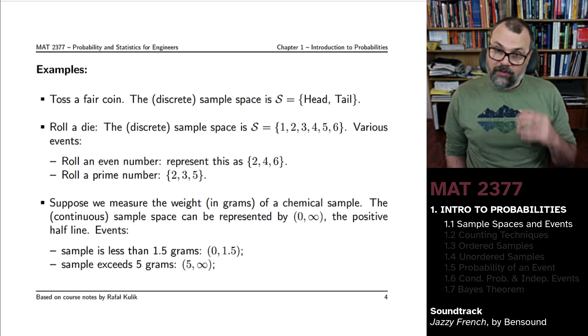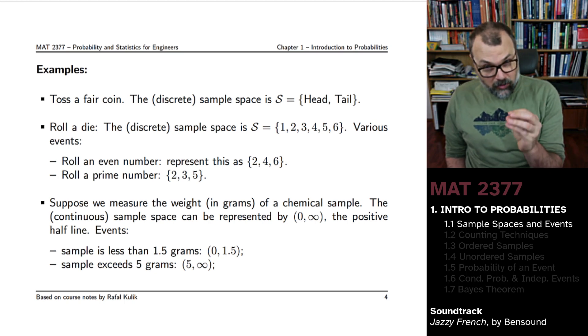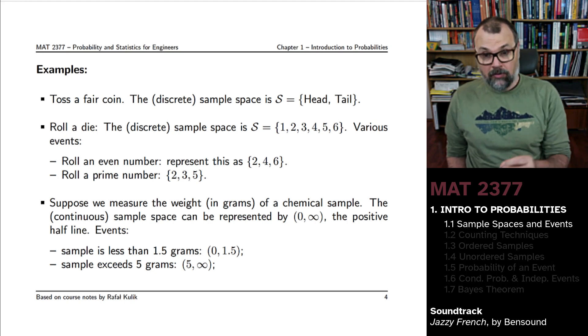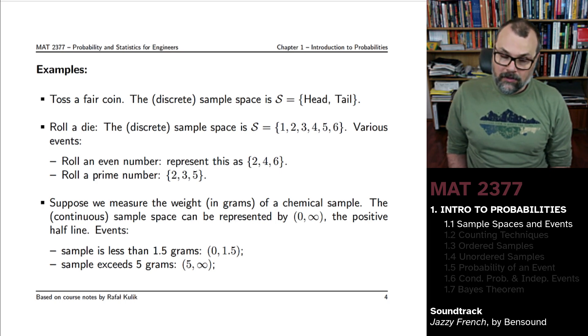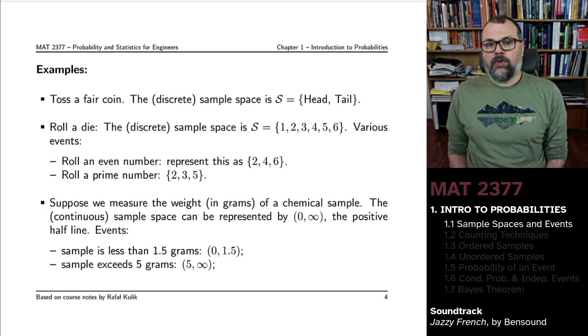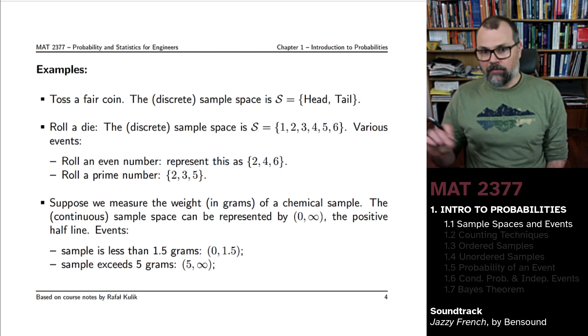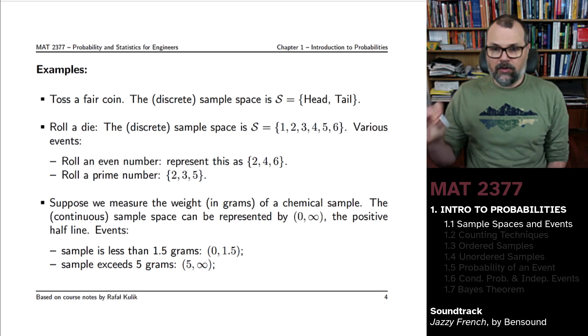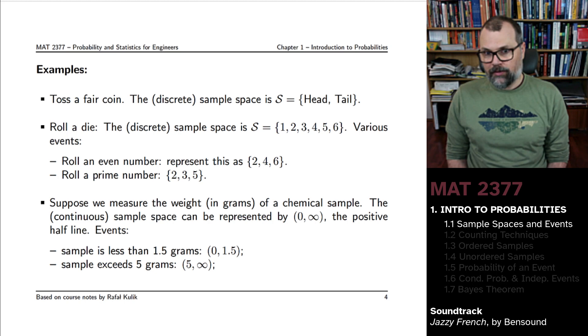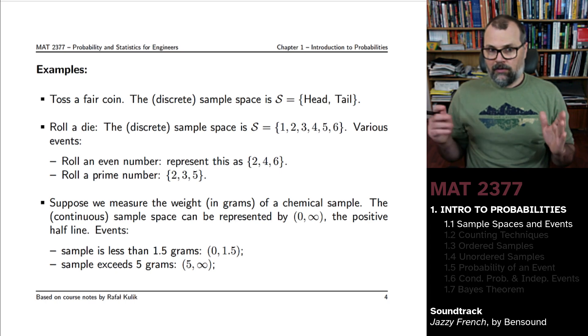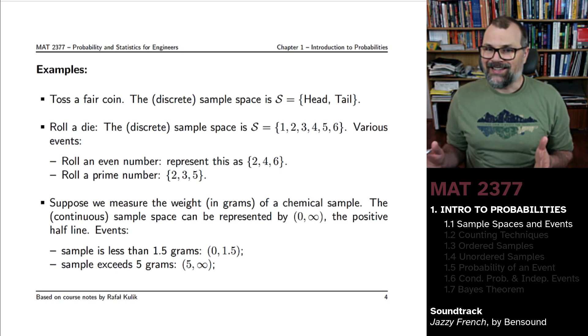And as we've spoken before, there might be a thing such as the smallest possible weight you can have, which is non-zero, the Planck weight, if you want. And so it isn't true that any potential real number could be the result of your experiment. But we will still treat the sample space as continuous.